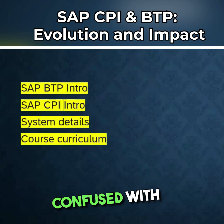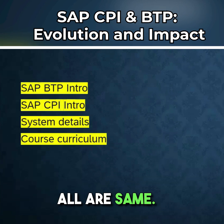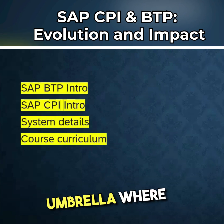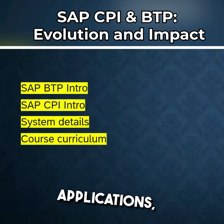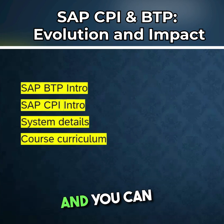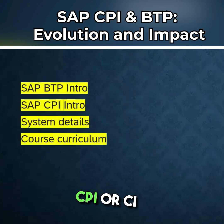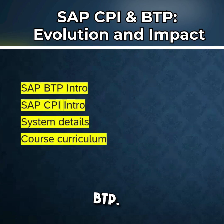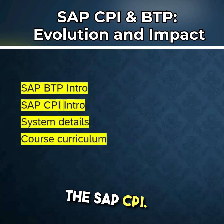So never get confused with this terminology — whether it's CPI, HCI, or CI, all are the same. BTP is a kind of unified umbrella where you can see lots of tools or applications and access them. Suppose you want to start working on SAP CPI or CI, then you have to first log into the SAP BTP, and then only you can navigate to the SAP CPI.